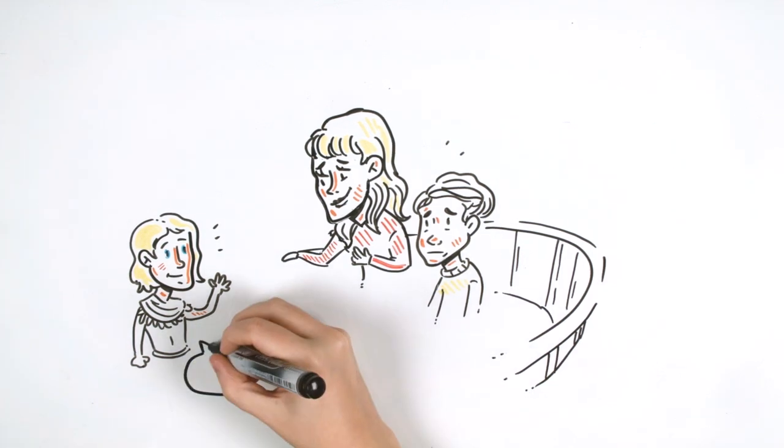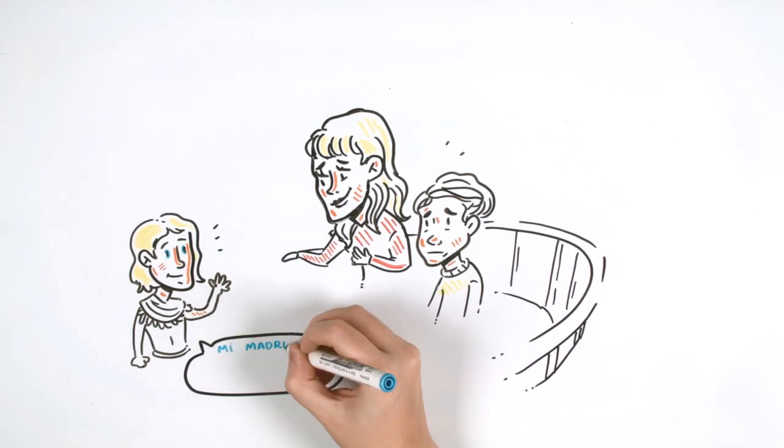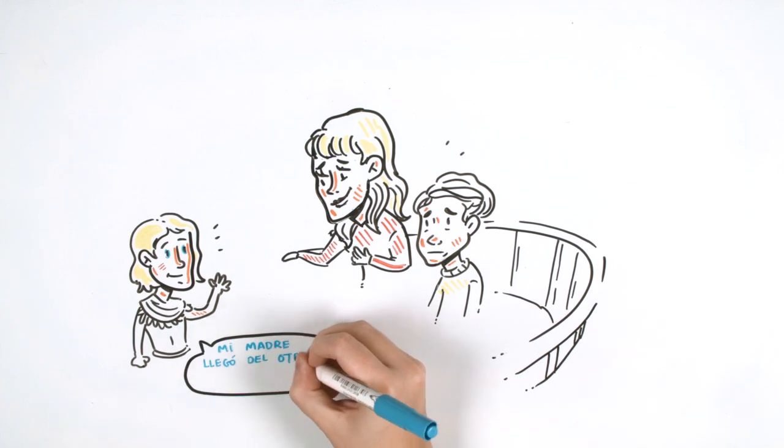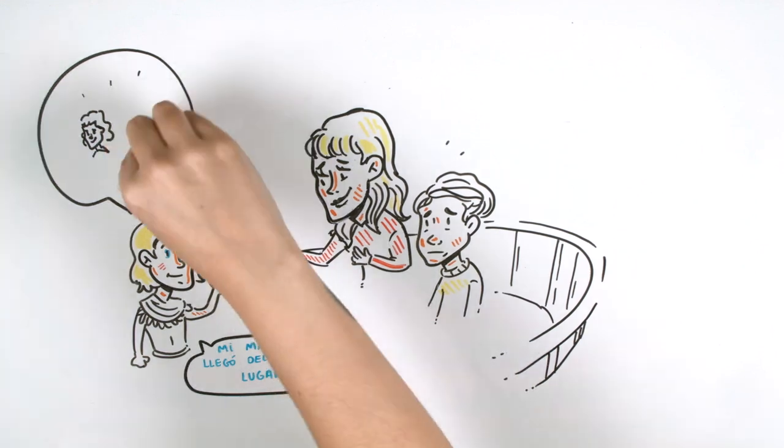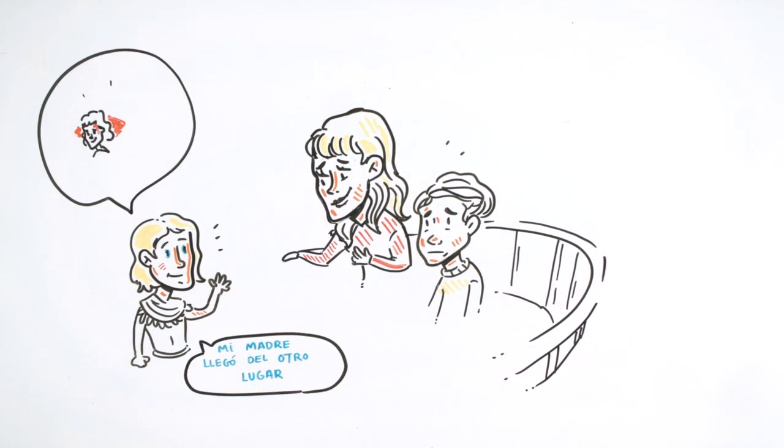The young man told them that Linda, his mother - Lenina was violent with the word - had arrived from the other place with another man before he was born. On one of her days off, she went for a walk and she fell into a ravine and injured her head. Since then, she'd never heard from the man who was the boy's father.